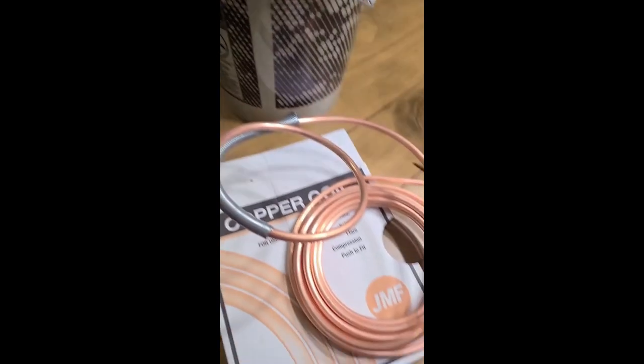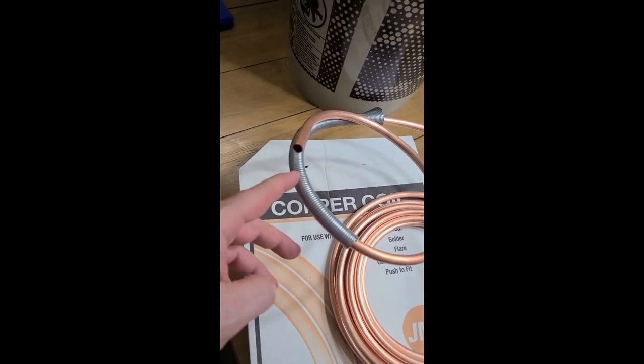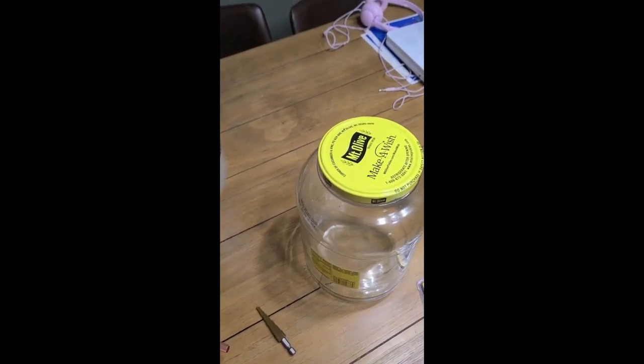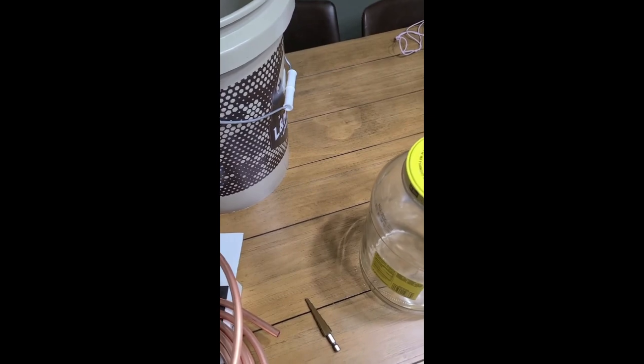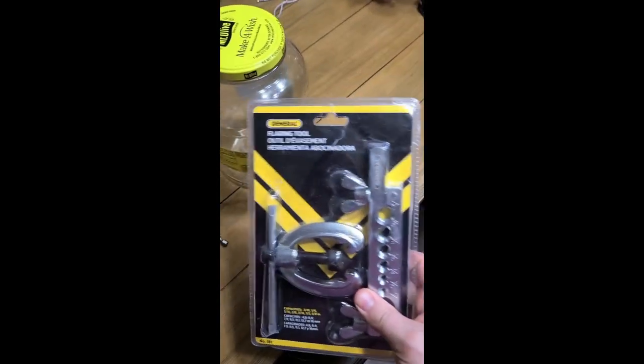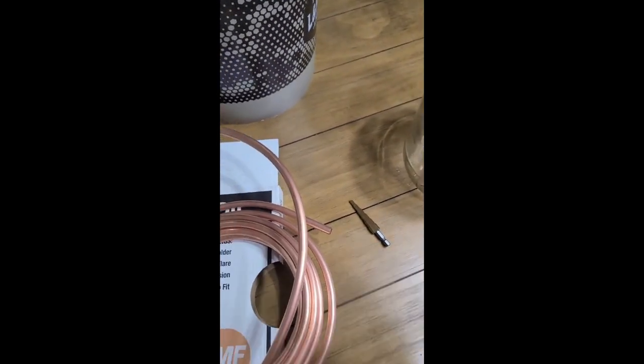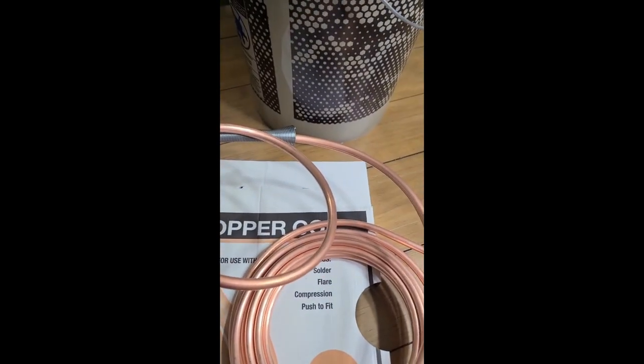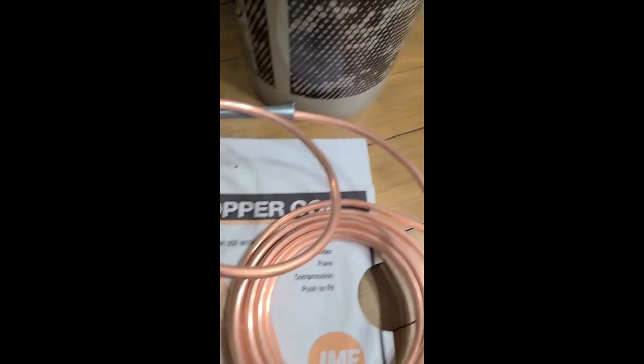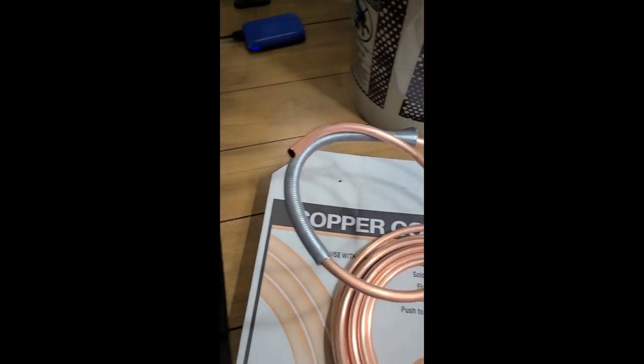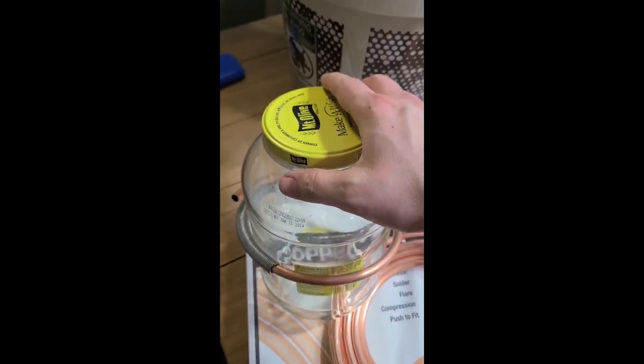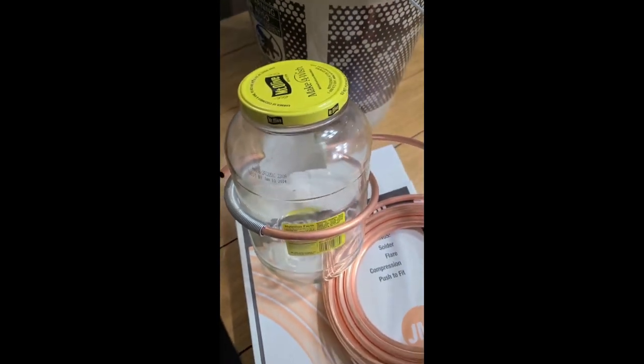So we got our five gallon bucket and copper pipe, the pipe bender. I'm using an empty pickle jar for a form to keep the shape of the pipe. We'll need a flare tool to flare out the fittings that we take off our existing condenser. I started wrapping this and just slowly working it around. Make sure you take your time, you don't want to kink your copper.